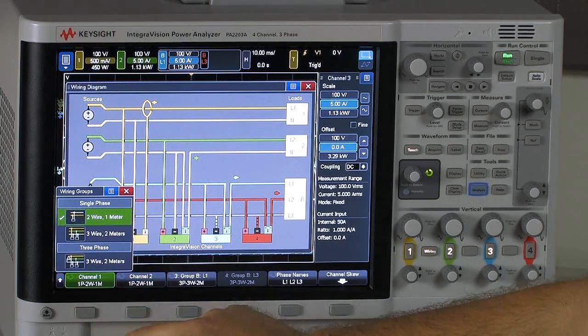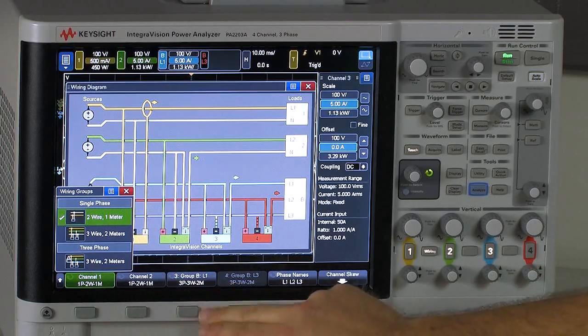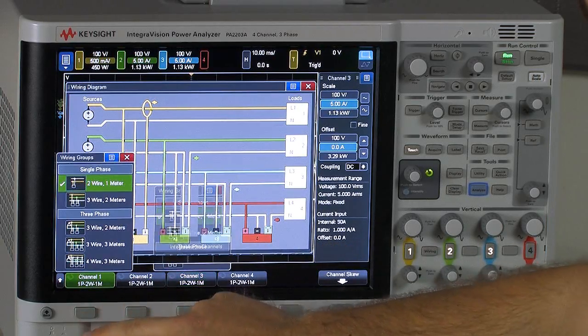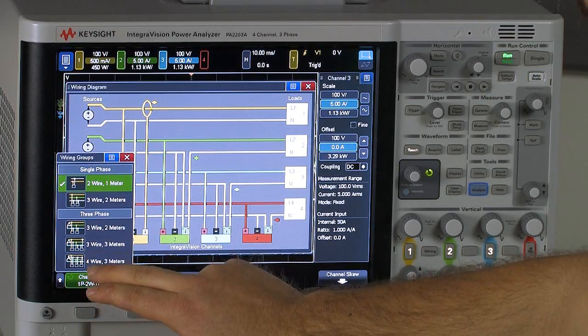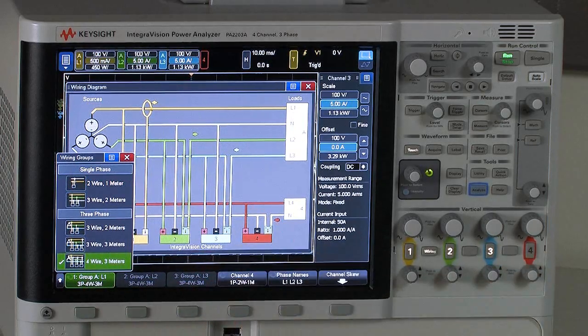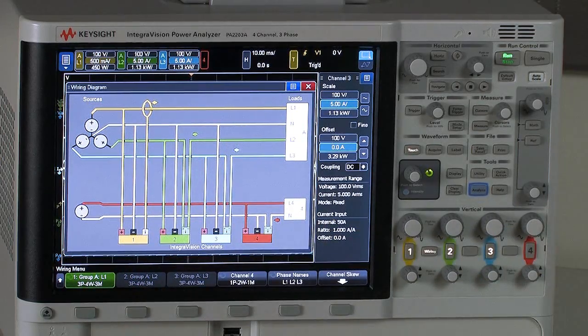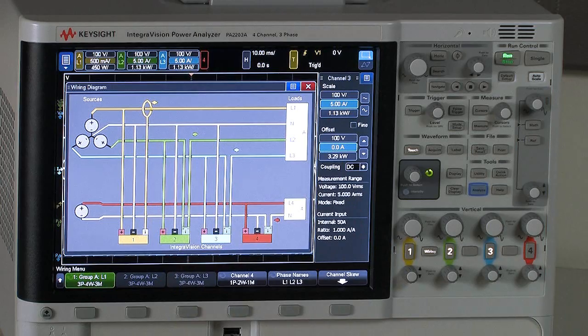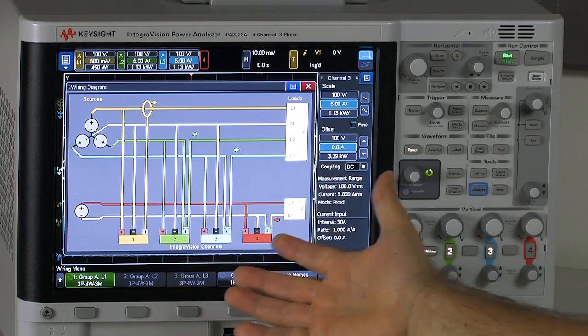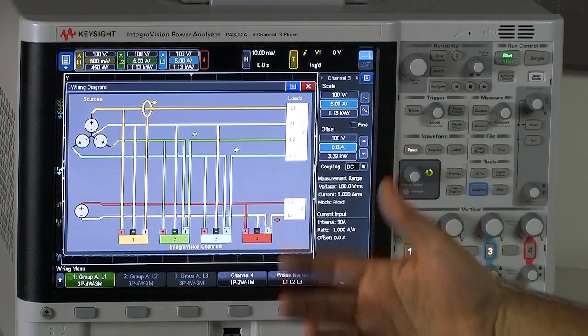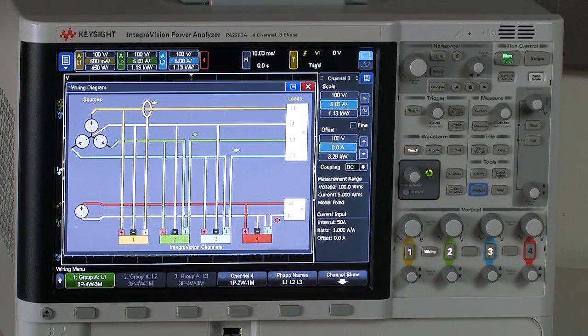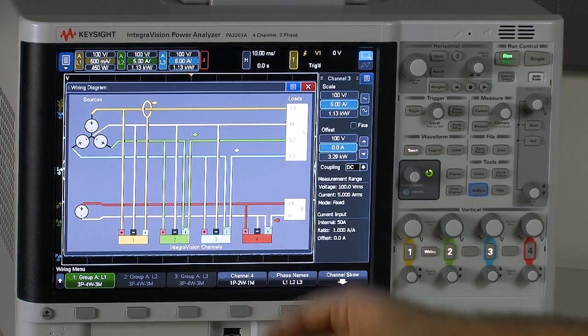The last configuration here that I'm going to show is the Y measurements or the four-wire three-meter configuration. So we can see, again, the diagram is updated. It's now set up for Y. And basically, again, you can look at the diagram as you make your connections to the instrument and proceed from there.